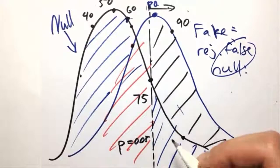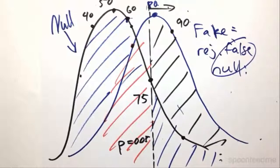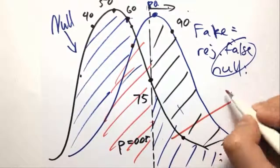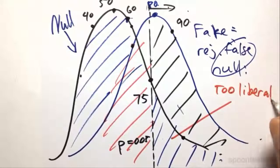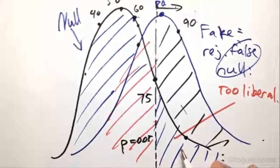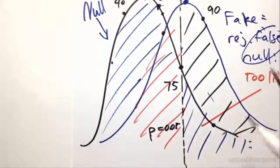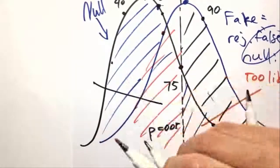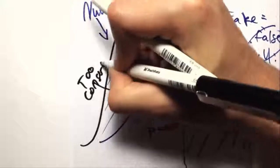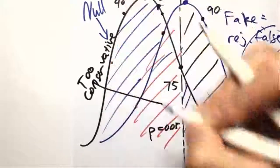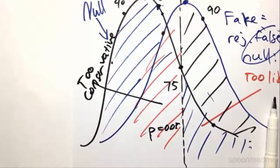Another way to think of these two things is that, here, we were being too liberal in our decision-making, and it was a false alarm. And, here, we were being too conservative. That's the way you can think of it.